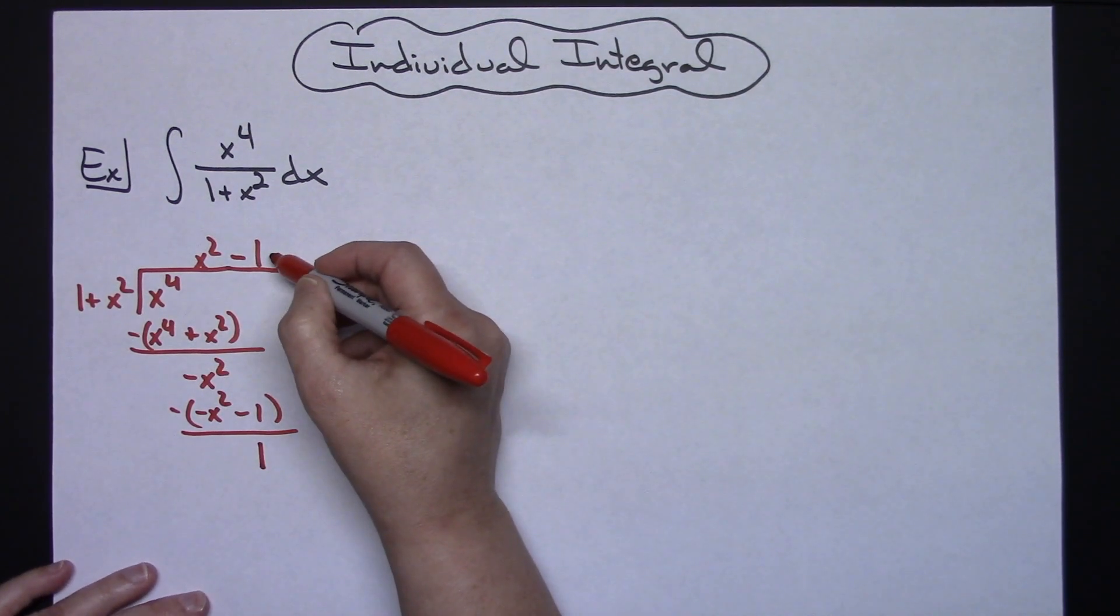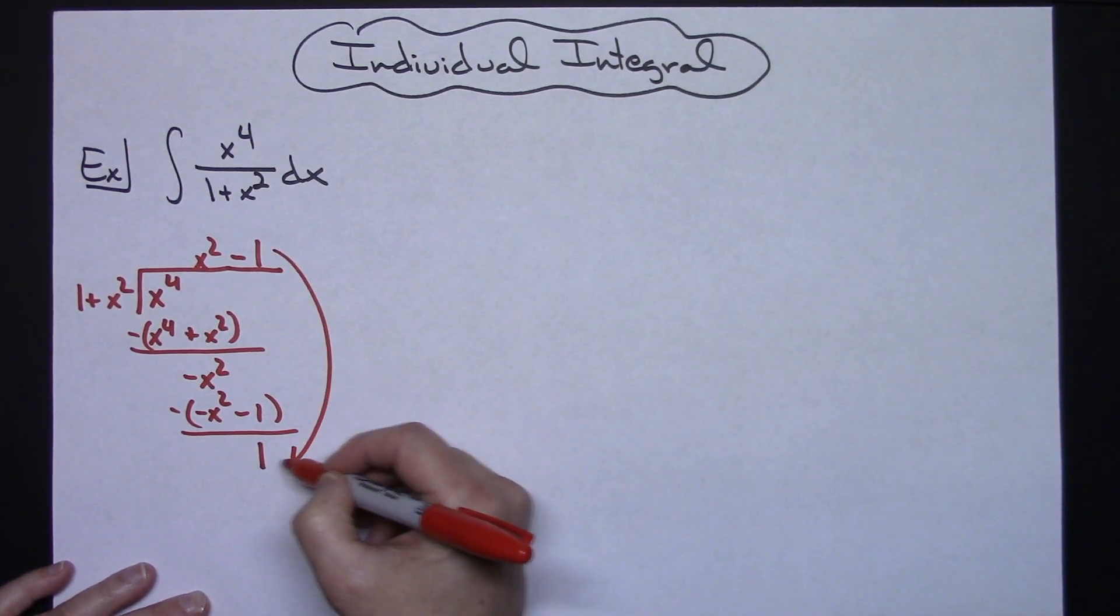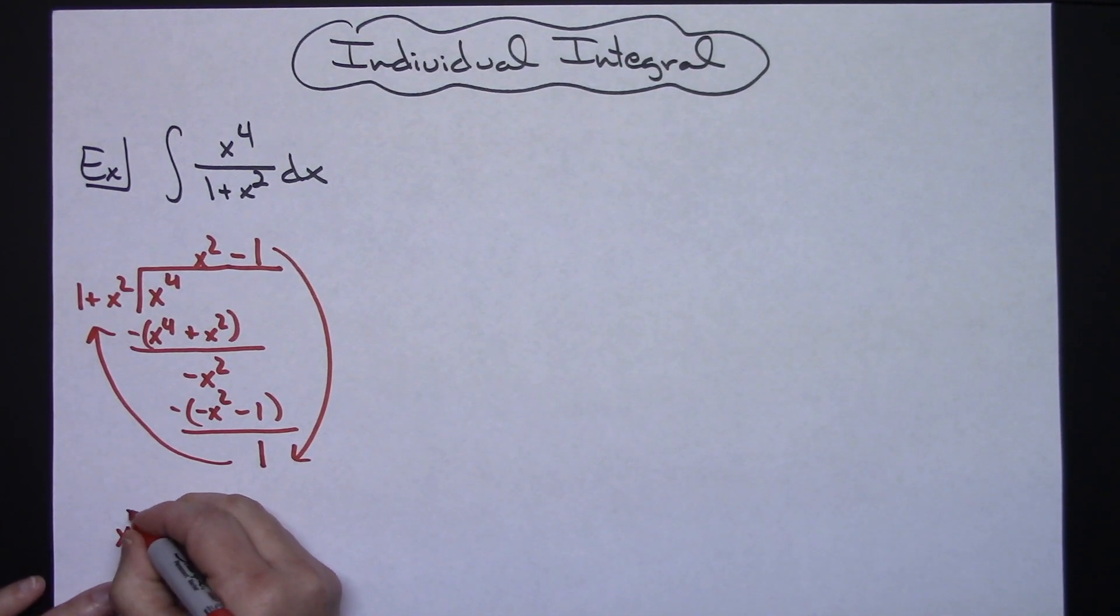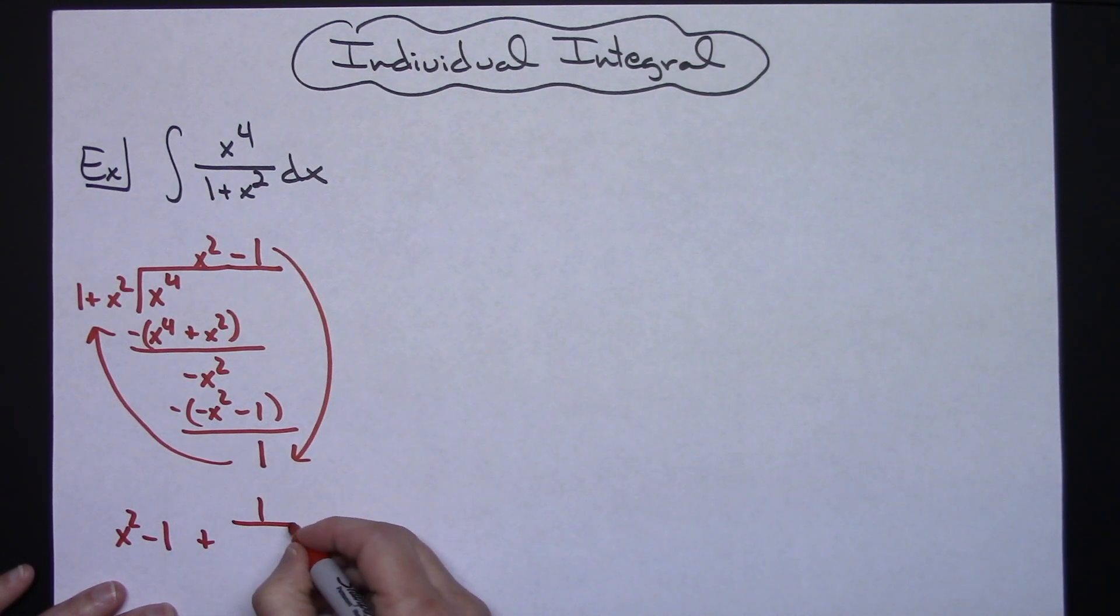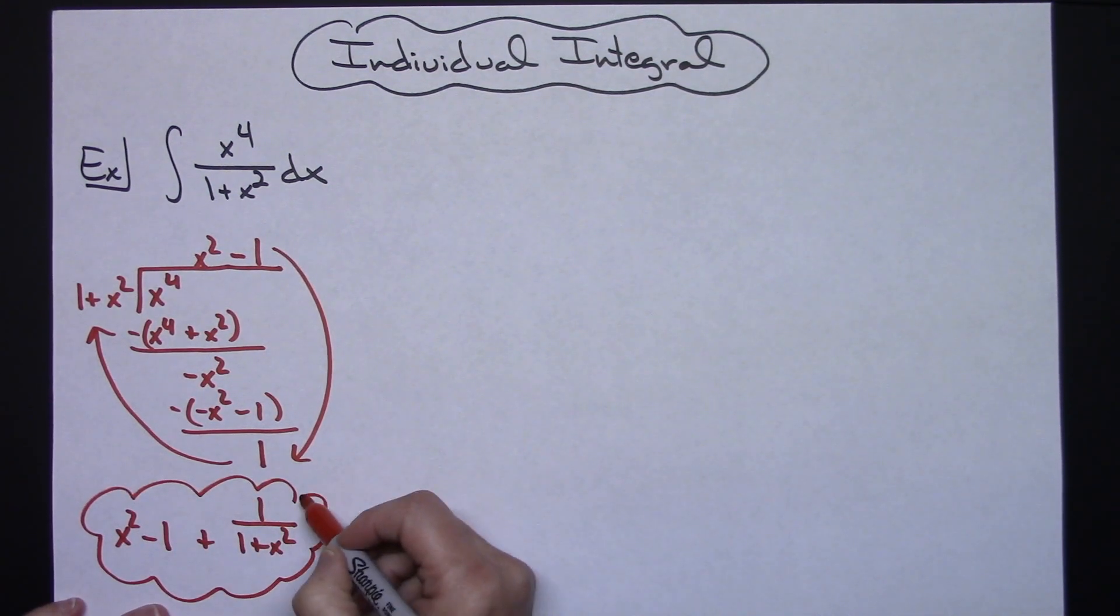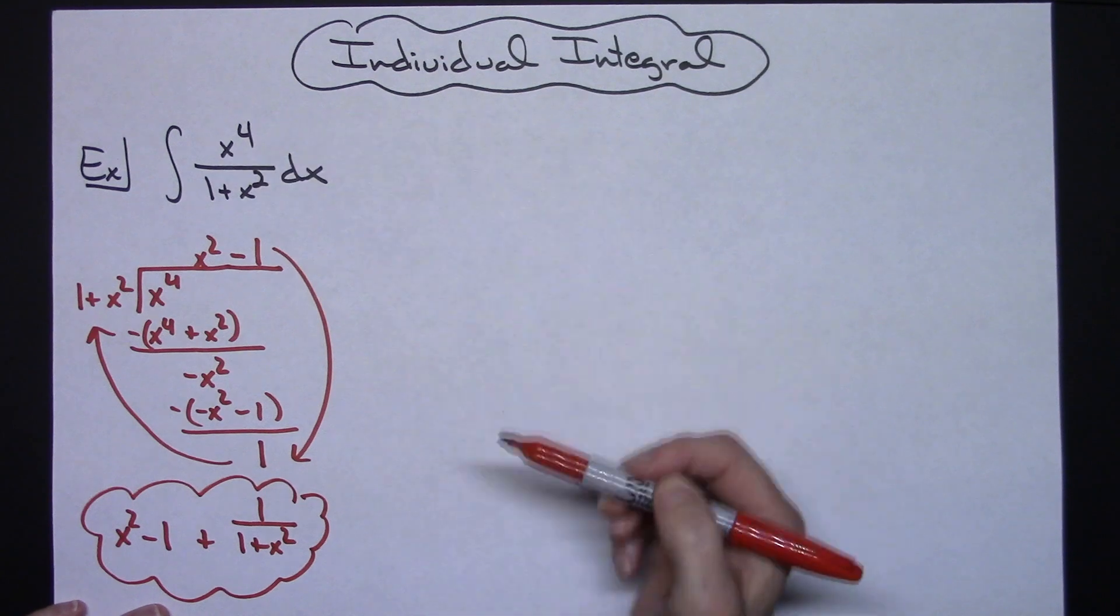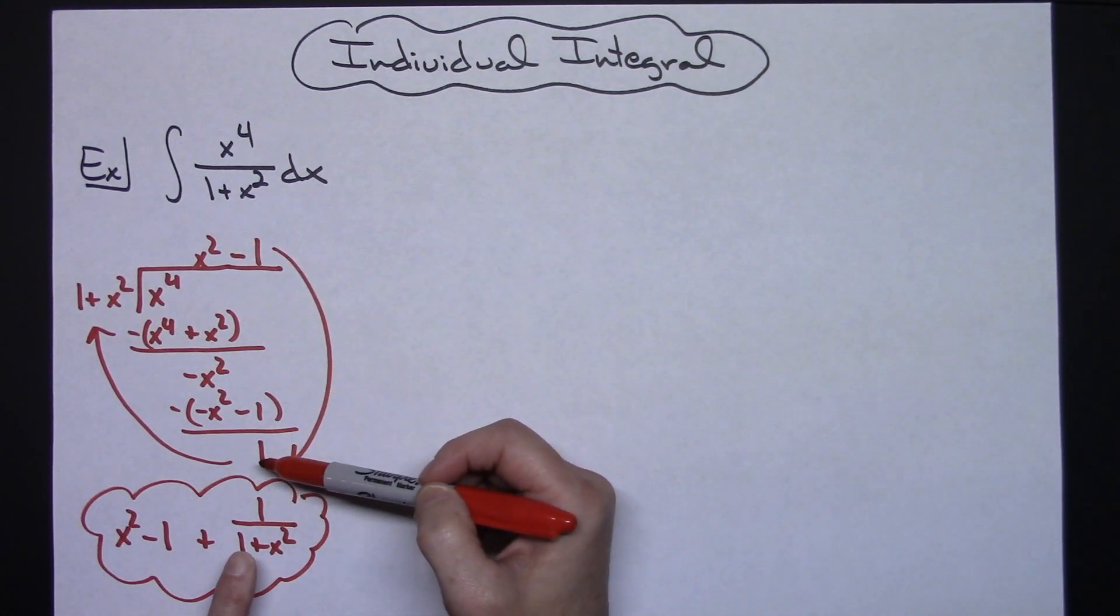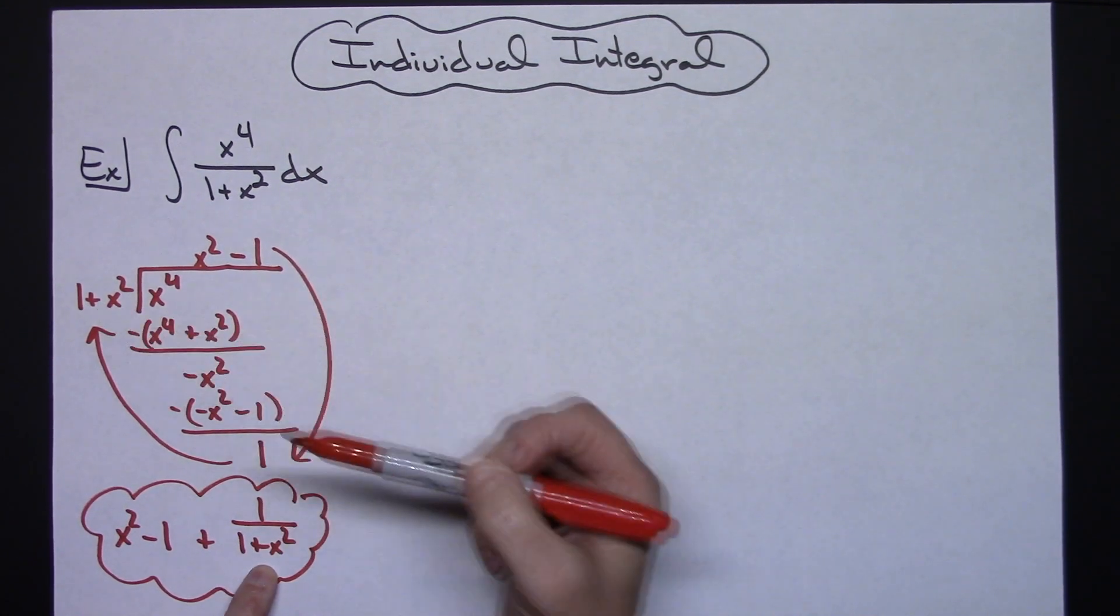Now starting up here at the top and going counterclockwise around, I can write my equivalent expression. So x squared minus 1 plus 1 over 1 plus x squared. That's going to be my equivalent expression that is equivalent to this original rational expression. So x squared minus 1 plus the remainder over what you divided by.